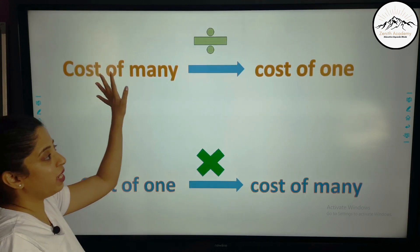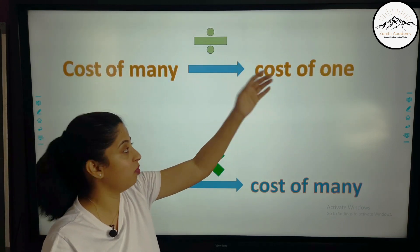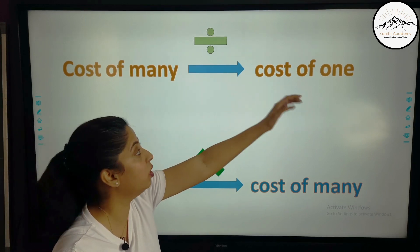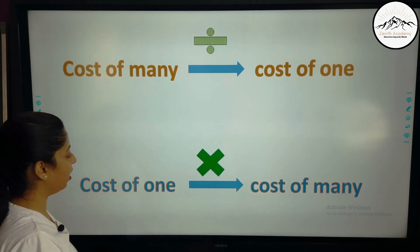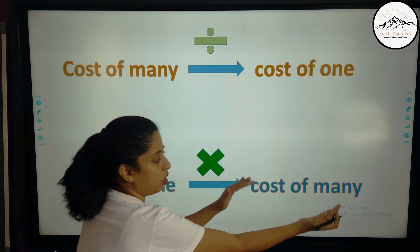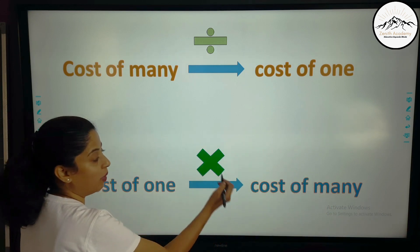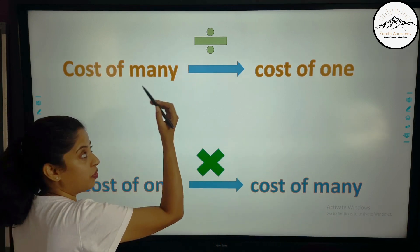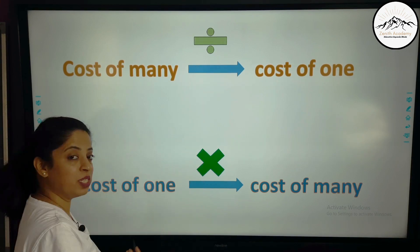I hope now you have got this. So from many to cost of 1. When we want to find the, from the cost of many to cost of 1, we will divide. And then from the cost of 1 to another cost of many, we will multiply. So first step is division. Second step is multiplication.